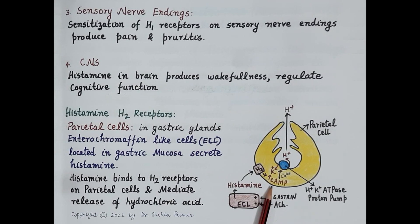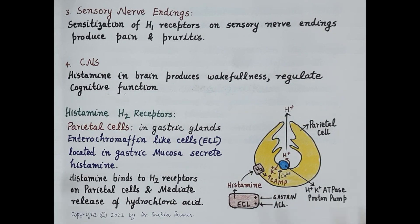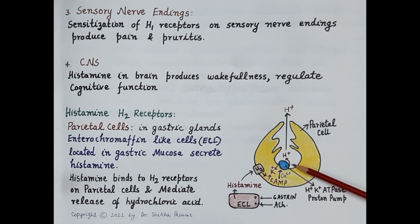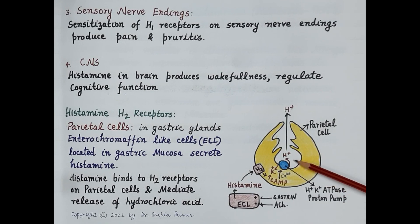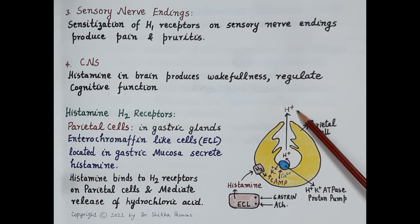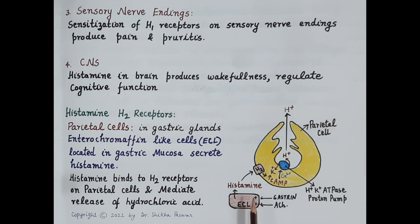The increased cyclic AMP further activates hydrogen-potassium ATPase pump in the presence of calcium ions. This hydrogen-potassium ATPase pump is also called the proton pump. Stimulation of this proton pump releases hydrogen ions — that is, hydrochloric acid is released. Thus histamine stimulates parietal cells to produce hydrochloric acid.